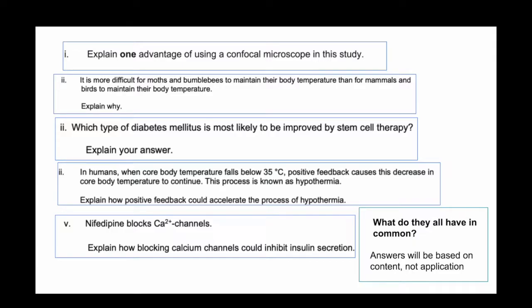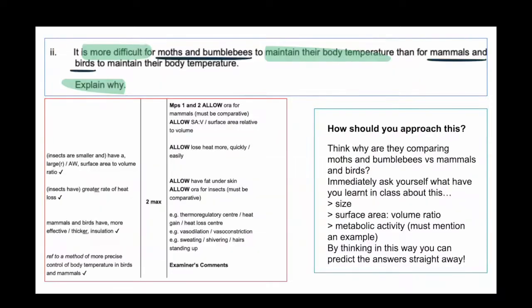Here is an example question: It is more difficult for moths and bumblebees to maintain their body temperature than for mammals and birds to maintain their body temperature. Explain why. Immediately, this is how I would approach this. I think, well, why are they comparing these two subsets or species? Then I think, what have I learnt in class to do with it?